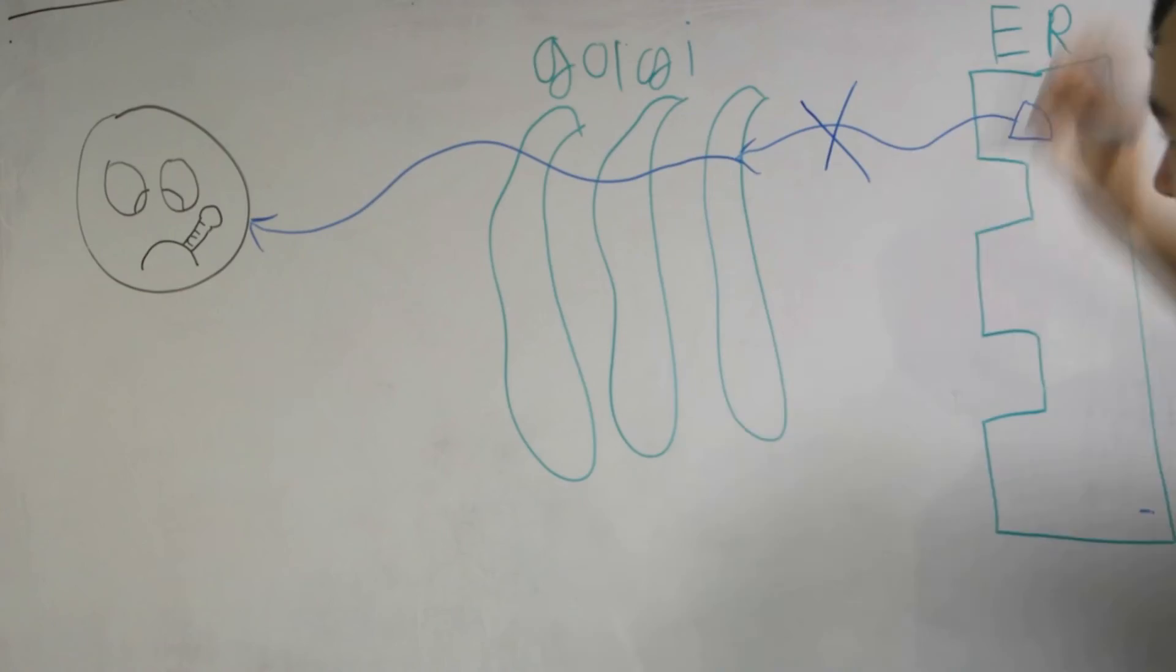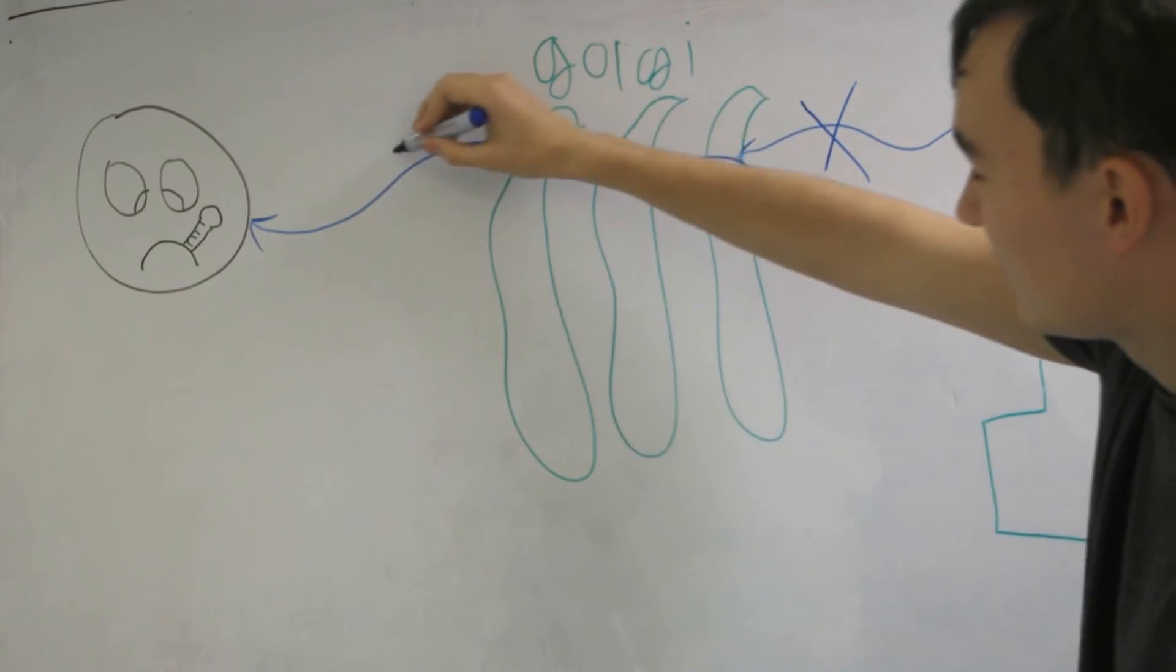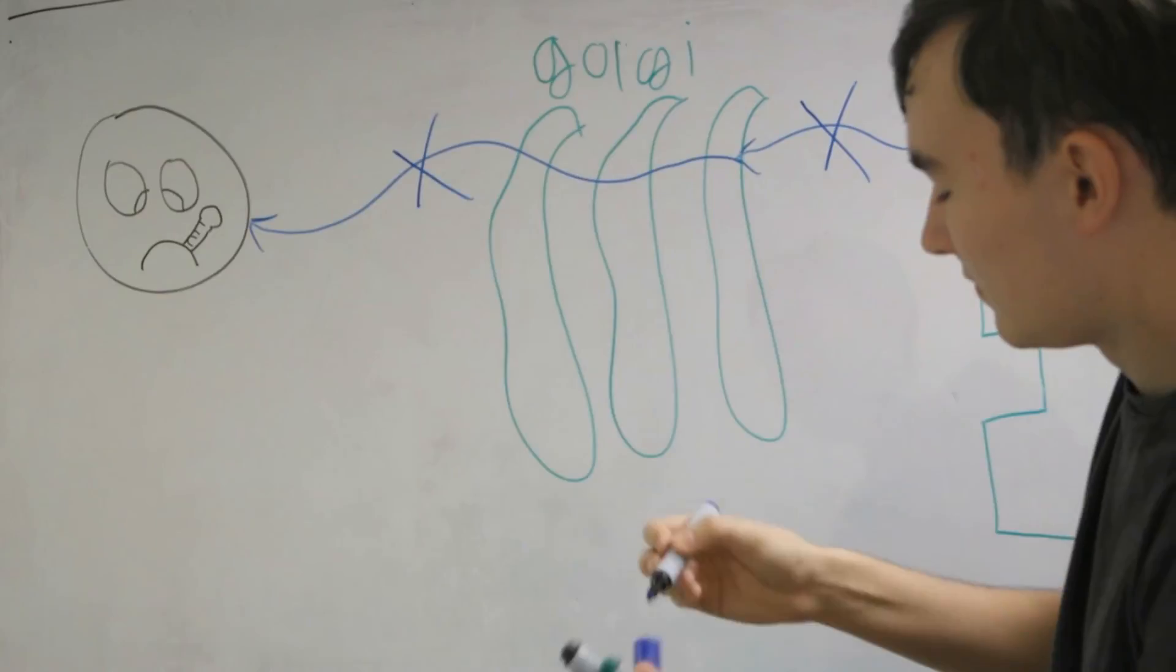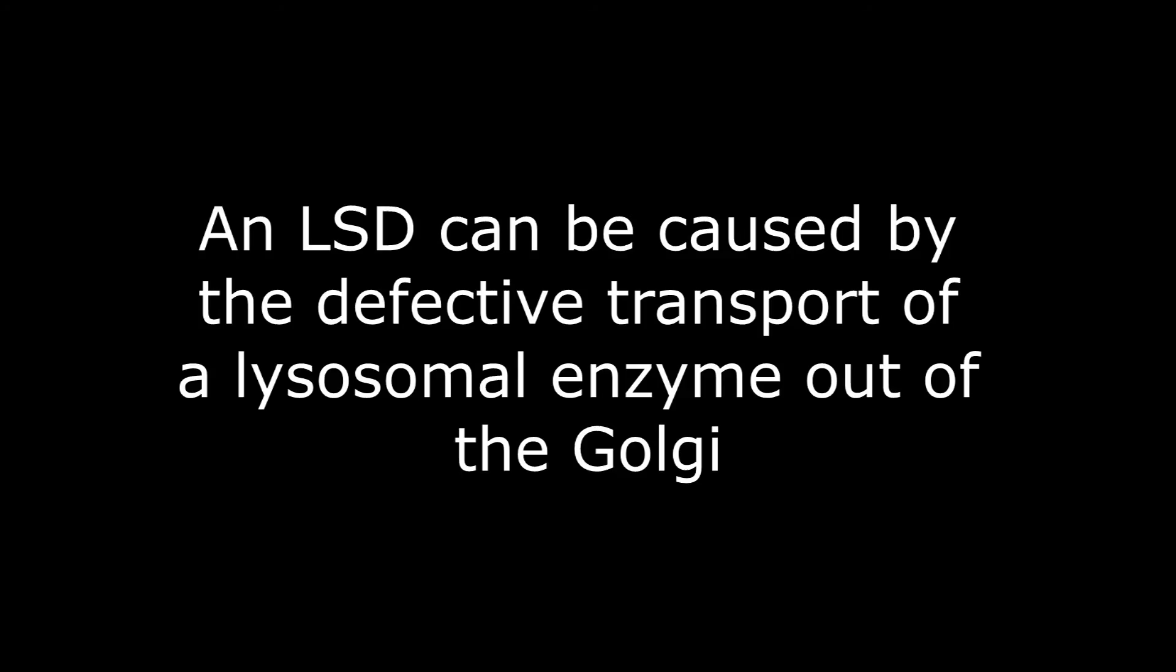In other diseases, the enzymes needed to enter the lysosome get stuck in the Golgi and are unable to move. And the final type of most common dysfunction is where the enzyme itself is non-functioning. It quite easily makes it to the lysosome, but when it gets there it is unable to break down its substrate.